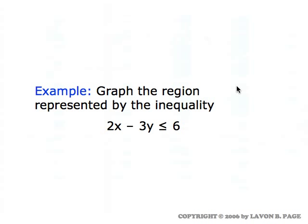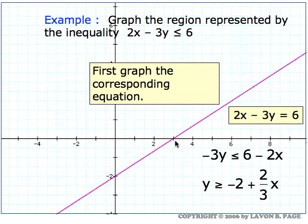When we solve linear programming problems graphically, we're going to have to find all the points in the plane that satisfy a certain linear inequality. Here's an example: what points in the plane satisfy the condition 2x minus 3y is less than or equal to 6? We want to draw a picture of that set of points. The first thing we do is graph the corresponding straight line, 2x minus 3y equals 6. When you graph that equation, you get the straight line shown in purple right here.